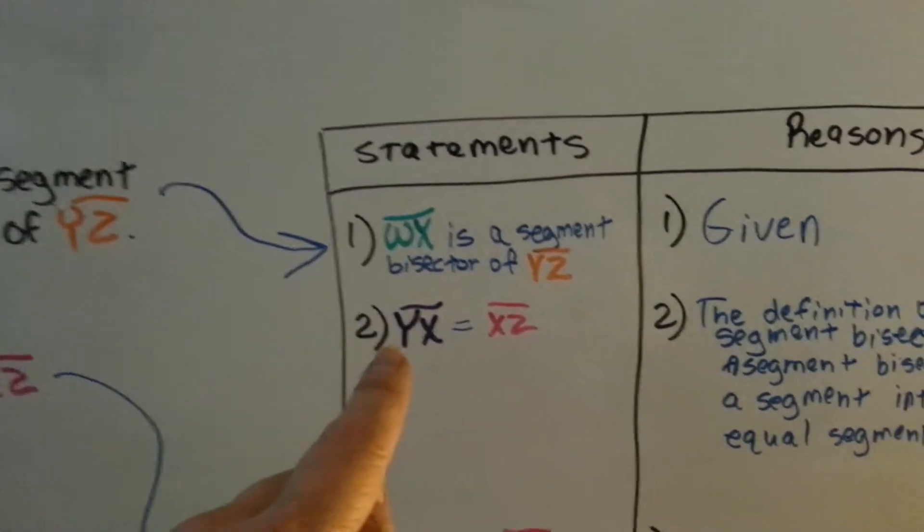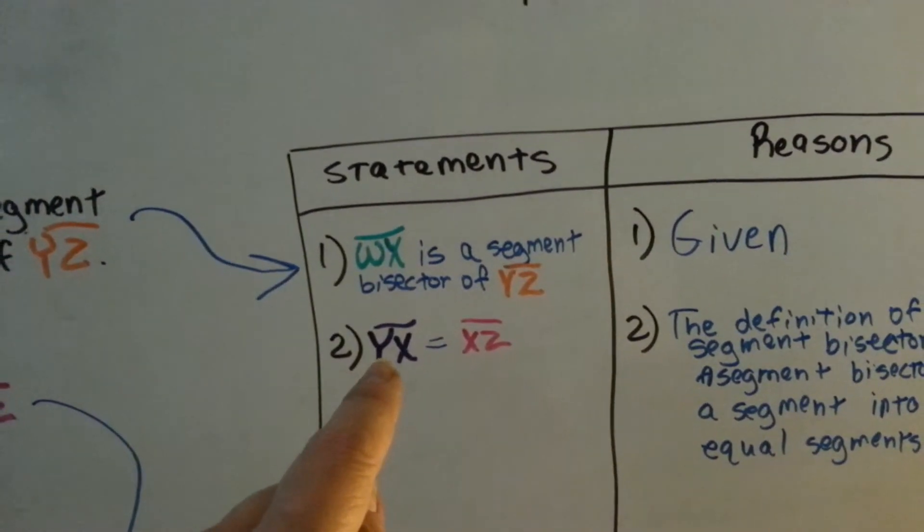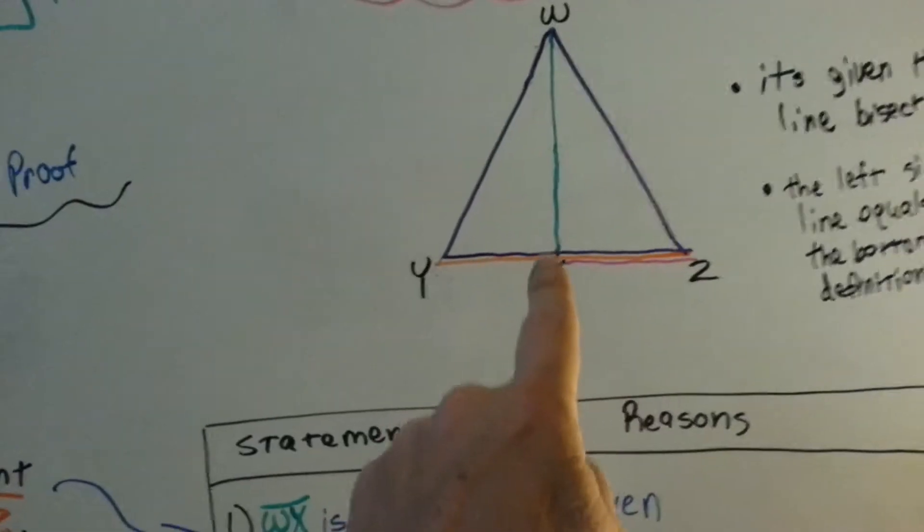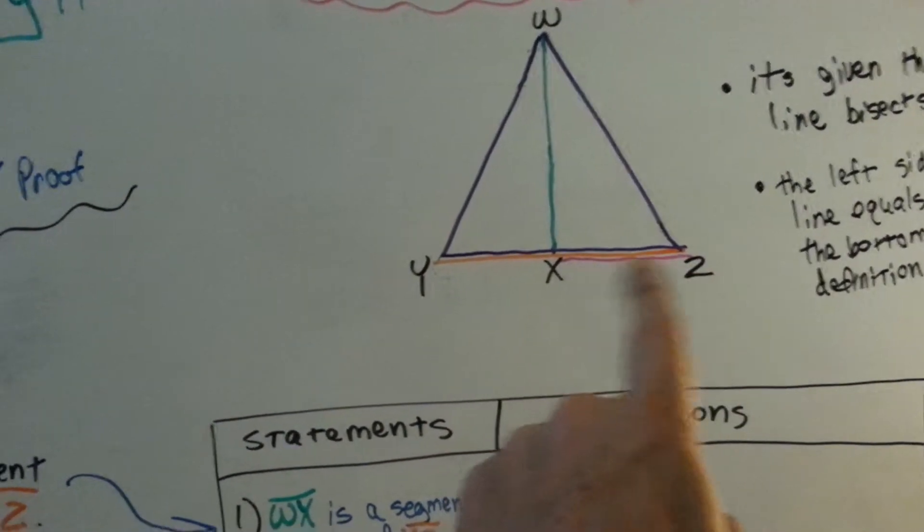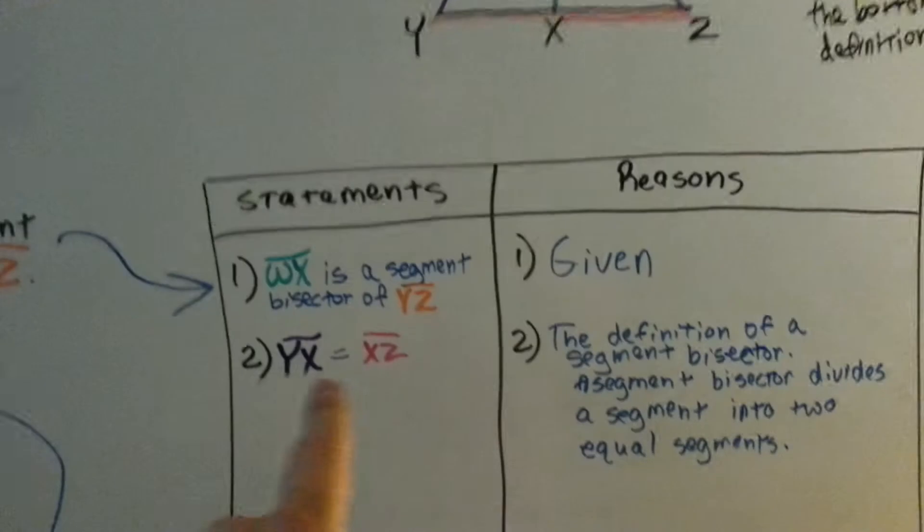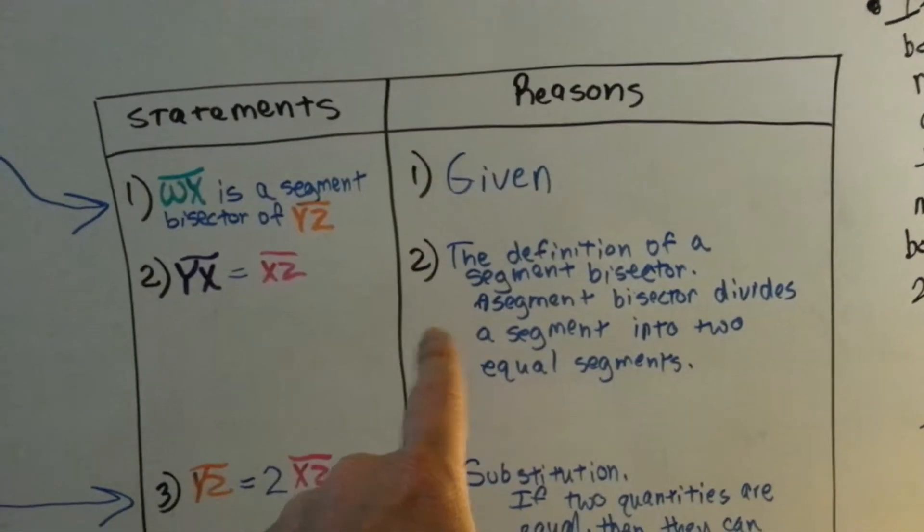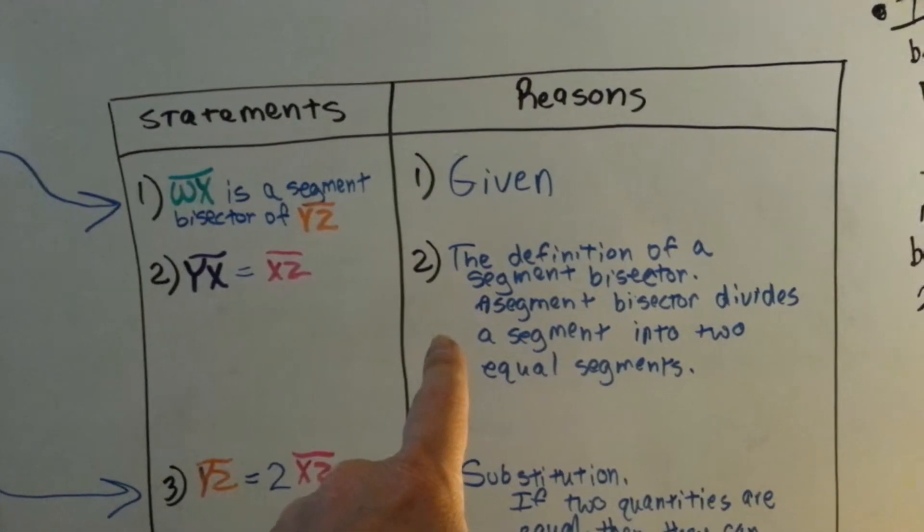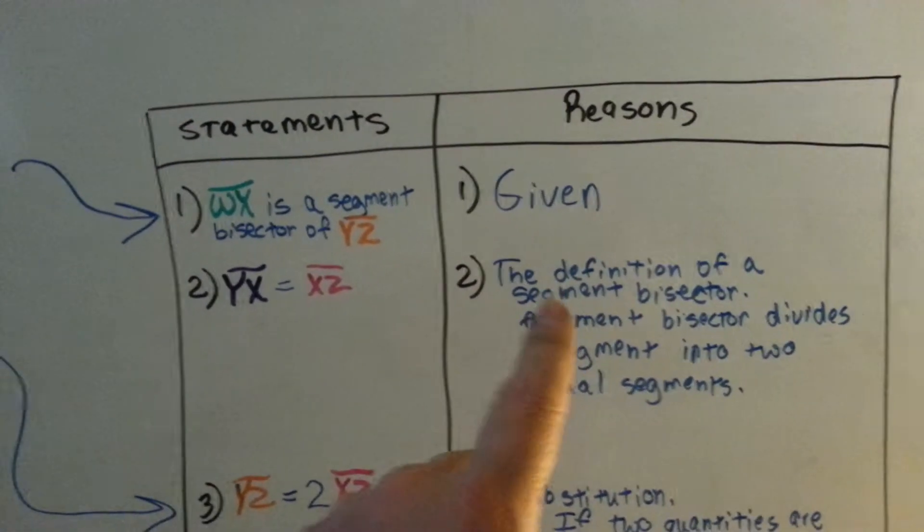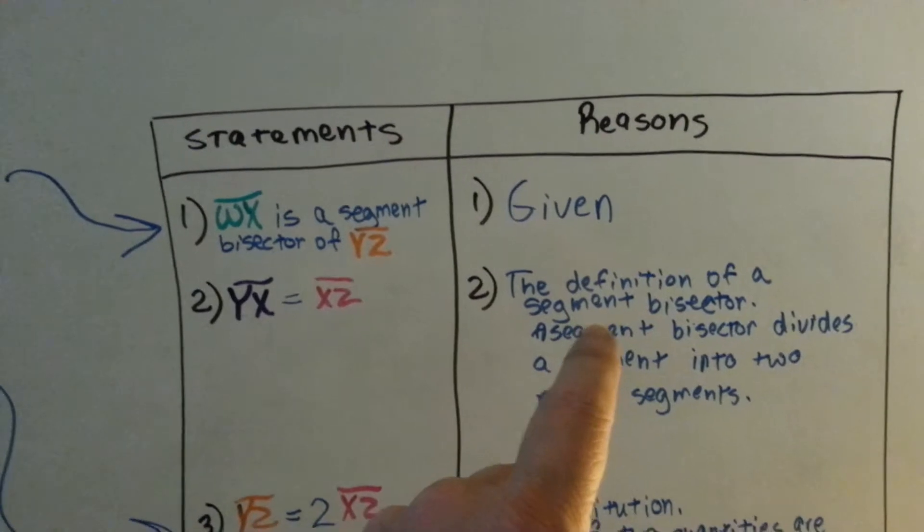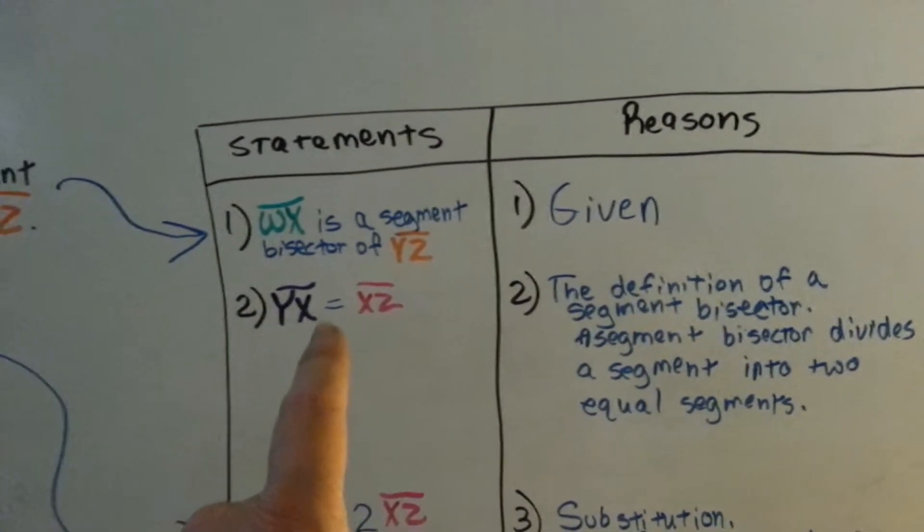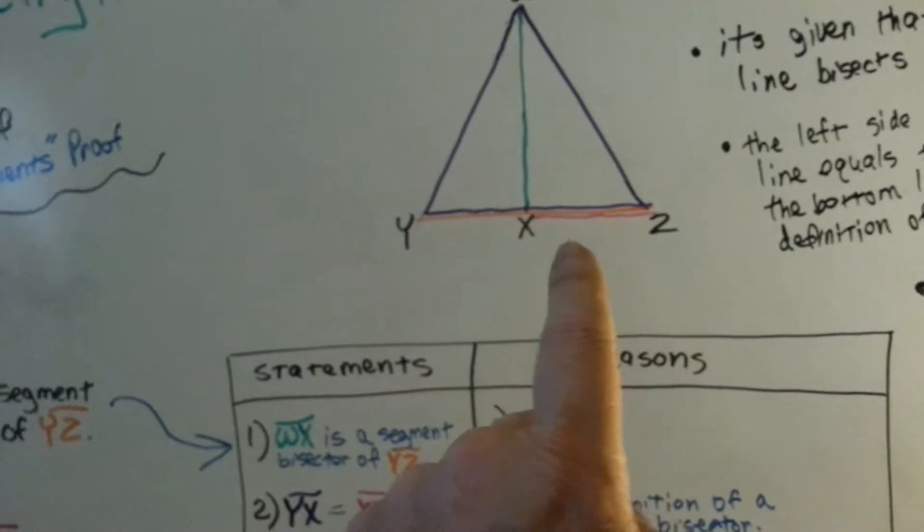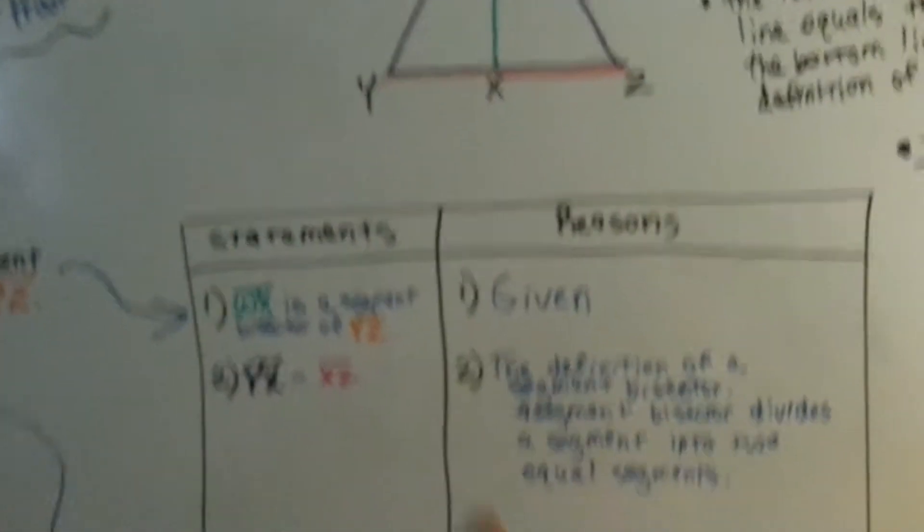The second step we made was yx, which is from here to here, is equal to xz. Our reasoning is the definition of a segment bisector, which says a segment bisector divides a segment into two equal segments. That definition is our reason why this is true.